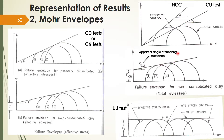In the case of the UU test for normally consolidated clay, it is not possible to get an effective stress Mohr circle, so the curves are drawn based on total stresses and the φ value will be 0. This is how you represent the results using Mohr envelopes.